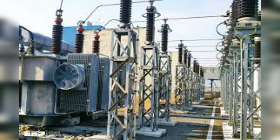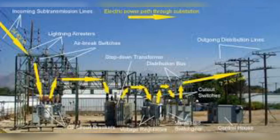The main function of a loop feeder is to supply two or more load points. Each load point can be supplied from either direction, so it is possible to remove any section of the loop from service without causing an outage at any load point.